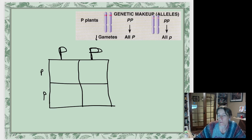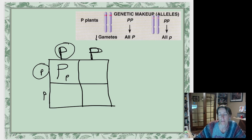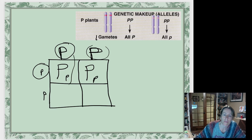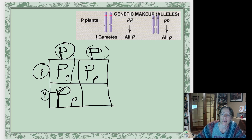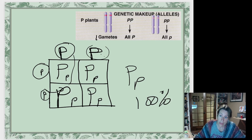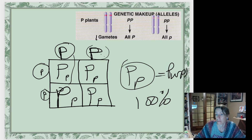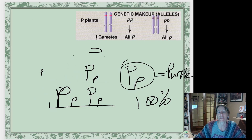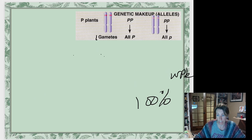What are all the possible outcomes? This egg could meet this sperm: big P from the egg and little p from the sperm. Each combination gives big P, little p. It doesn't matter which egg meets which sperm — they're all going to be big P, little p, 100%. And we know from looking at the plants that big P, little p equals a purple flower, because 100% of the F1 babies came out purple-flowered.